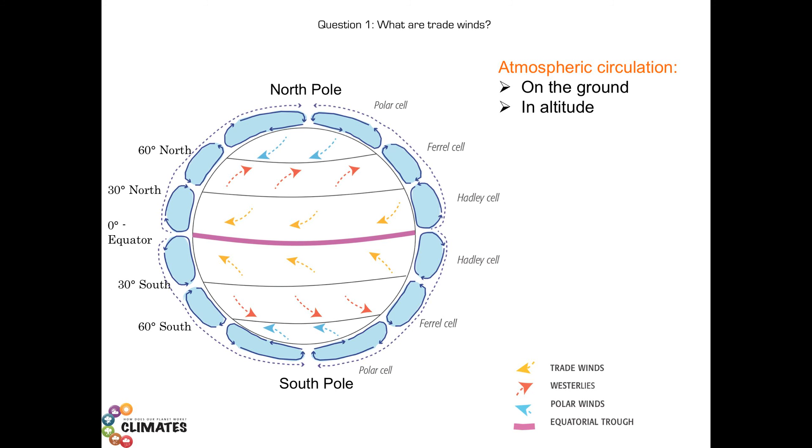Hence, winds will be diverted on the right in the northern hemisphere and on the left in the southern hemisphere. And this is due to the Earth's rotation. There is a Coriolis force.